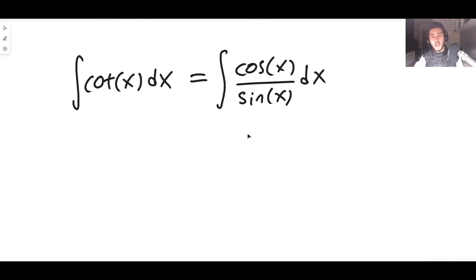So we have now got a reverse chain rule situation because we have got a fraction where we've got some denominator and the numerator is a multiple of the derivative of the denominator.